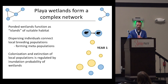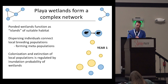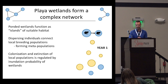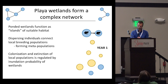In this wetland system, some wetlands contain water while others are dry — you can see that in brown. You get individuals that can disperse from wetland to wetland, connecting local breeding populations and forming meta-populations. You can have colonization and extinction over time.